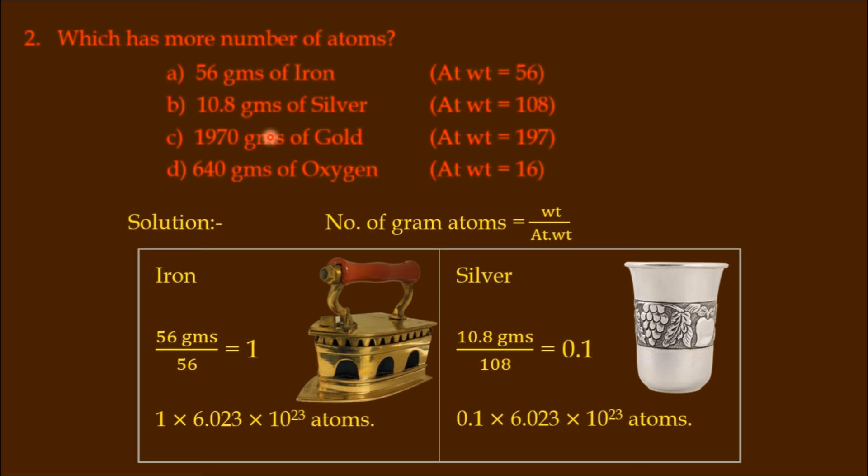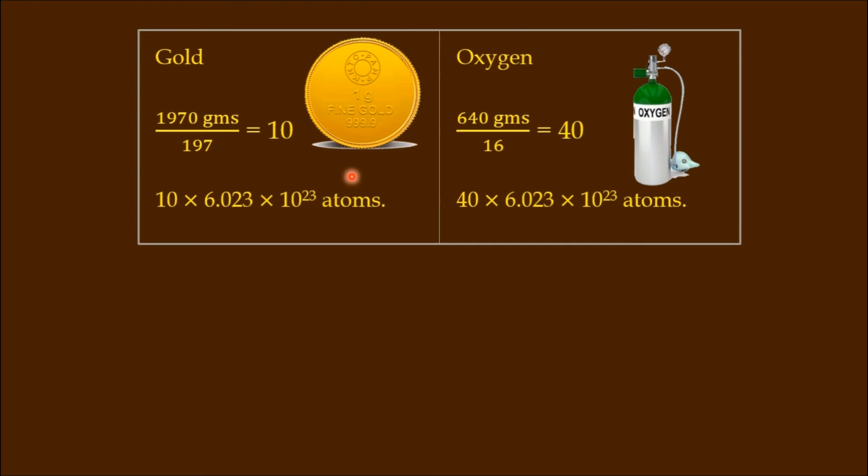Let us see options C and D now: gold and oxygen. This is a gold coin. The weight of the gold coin is 1970 grams. You know the atomic weight: 1970 by 197, which equals 10.